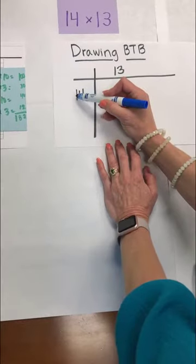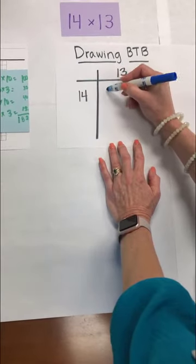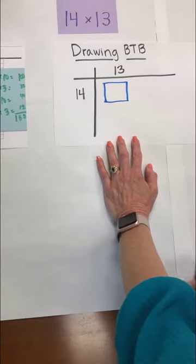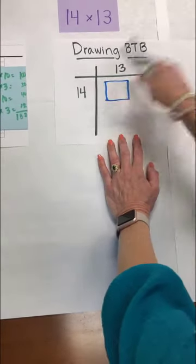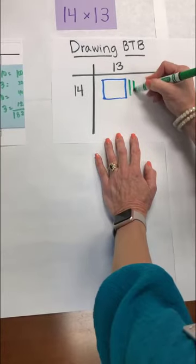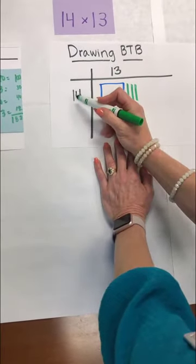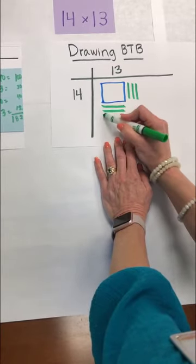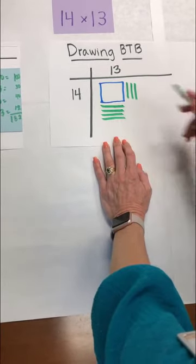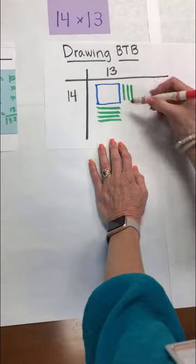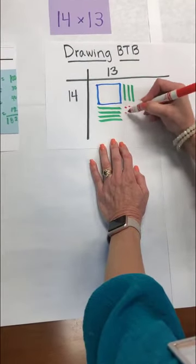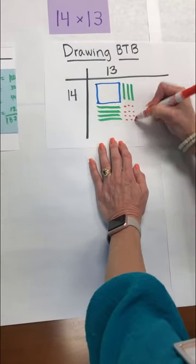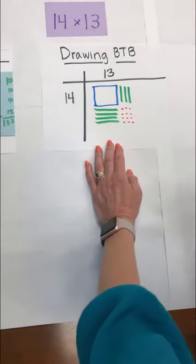So we're thinking 10 times 10 is our 100, 10 times 3 is 30, 4 times 10 is 40 and then 4 times 3 is our 12. So remember our ultimate goal is to keep this in what shape? A rectangle or a square so students can see that you have that shape here.